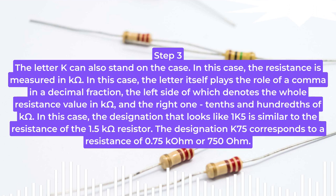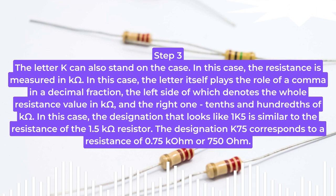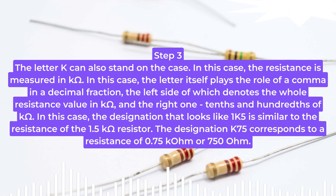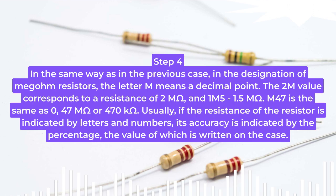Step 3: The letter K can also appear on the case, meaning the resistance is measured in kΩ. The letter itself plays the role of a decimal point: the left side denotes the whole resistance value in kΩ, and the right side the tenths and hundredths of kΩ. For example, 1K5 corresponds to 1.5 kΩ, and K75 corresponds to 0.75 kΩ or 750 ohms.